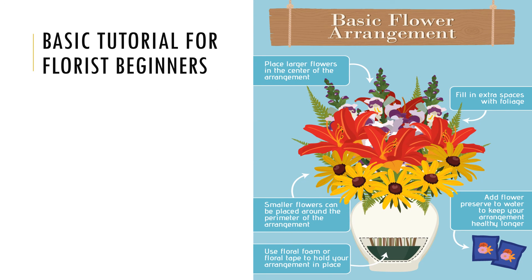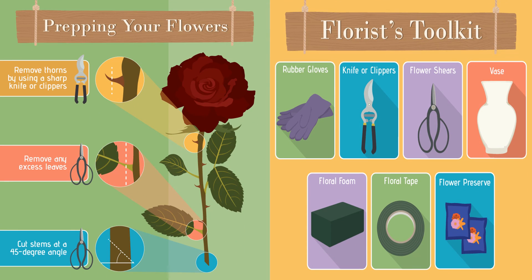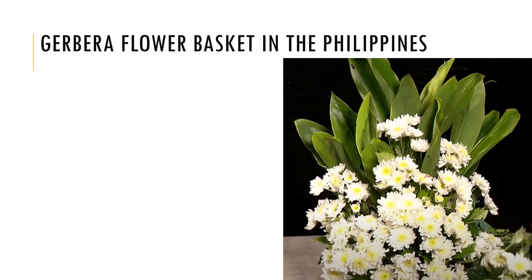For the basic tutorial for florist beginners: first, place the flowers in the center of the arrangement for focal emphasis; fill in the extra spaces with foliage; place smaller flowers around the perimeter; use floral foam to supply water at the bottom and keep flowers in place; and add flower preservative to keep your arrangement healthy longer. To prepare a rose, first remove the thorns using a sharp knife or clippers, remove any excess leaves, then cut the stems at a 45-degree angle.